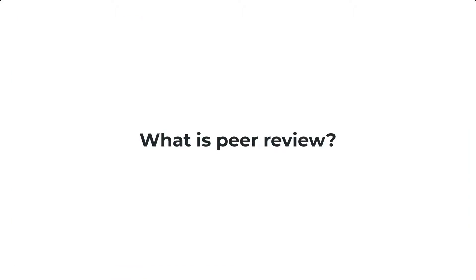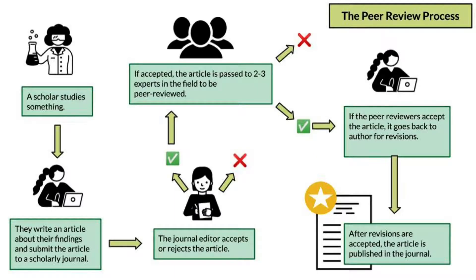What does it mean for a scholarly journal to be peer-reviewed? Many, but not all, scholarly articles are peer-reviewed, which is a process where experts in the author's field review the article before it is published. Reviewers, also called referees, evaluate the source as part of the body of research for a particular discipline. They make recommendations on whether it meets the standards to be published and will request revisions prior to publication. The process aims to ensure contributions made to the scholarly community are based on accurate, reliable, and original research findings and analysis.